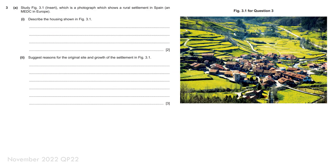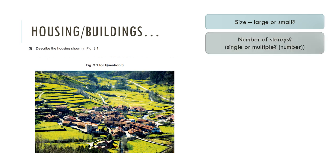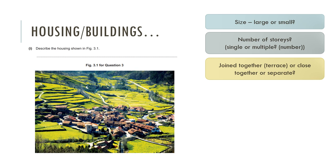Once you've identified the settlement type, that's a really helpful starting point because it already tells you a few things and gives potential reasons for the site and growth of that settlement. Then when it comes to the housing or buildings, we can start focusing on the actual buildings themselves. The first thing to consider is the size of the buildings — are they large or small? What's the average number of stories — is it single storey, bungalows, or are there multiple stories?